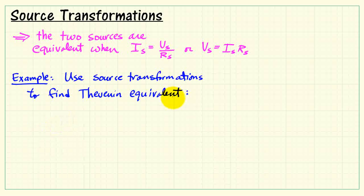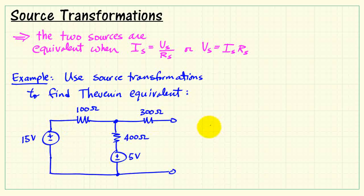Now let me show you how these source transformations can actually be used to find the Thevenin equivalent of a circuit. So with this example circuit, I'll begin by noting that I could convert or transform the voltage source form into its current source form.